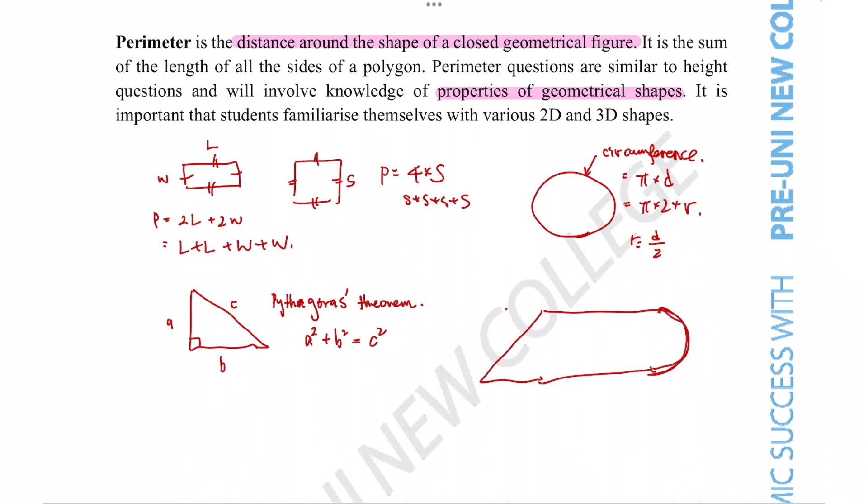If they ask you to provide the perimeter of this complicated shape, we just know that we can apply the knowledge from the individual shapes to this more compound shape. Just find the individual sections and add them up just like you would for a simpler shape.